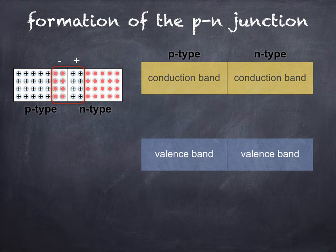Because of this, a potential difference is set up between the ends of the depletion layer, known as the junction voltage or potential barrier, which opposes the flow of further charges across the junction. In order for the P-N junction to conduct, this junction voltage must be overcome.